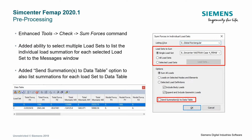Another tool FEMAP has enhanced is the Check Sum Forces command. The upgrade is that now you can sum multiple load sets. Previously, if you wanted to sum three load sets you'd have to run this command three times. Now you can sum all the load sets individually or select certain ones you want summed. You can also send these summations to the data table. It's important to note that this operation isn't combining all your load sets together — it's summing all the loads within each individual load set and reporting that separately.